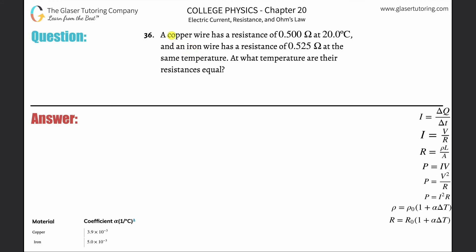Number 36. A copper wire has a resistance of 0.5 ohms at 20 degrees Celsius, and an iron wire has a resistance of 0.525 ohms at the same temperature. At what temperature are their resistances equal?